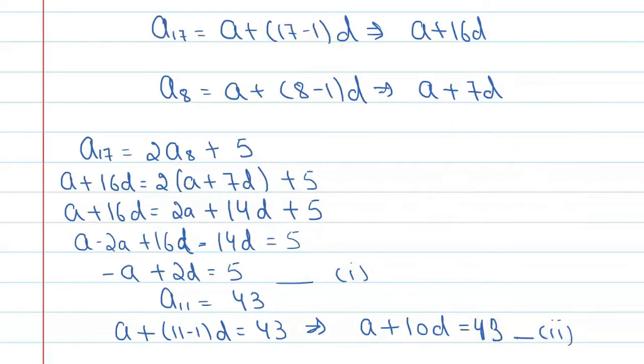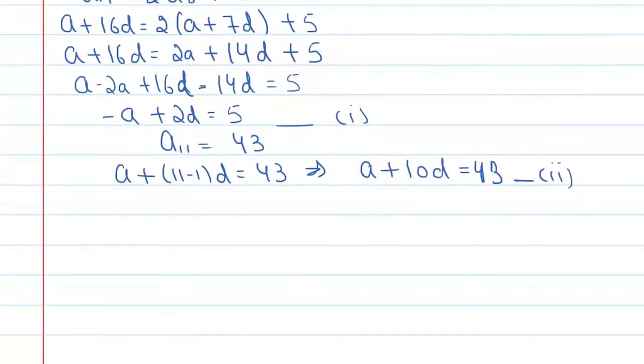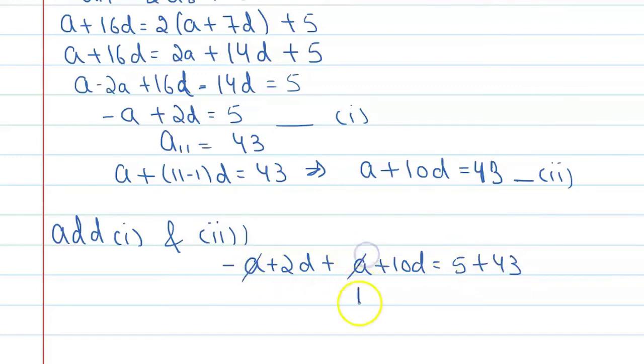Add equation 1 and 2. We will get minus A plus 2D plus A plus 10D equal to 5 plus 43. This A and this A will get cancelled. We will get 12D is equal to 48.